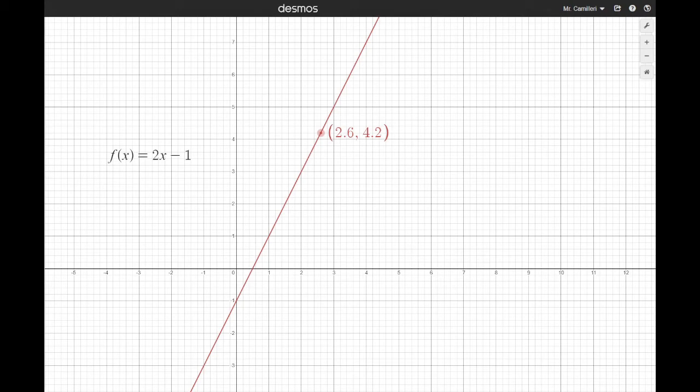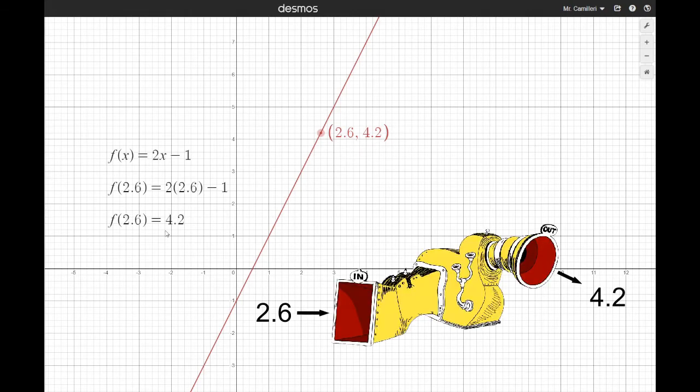So just like before, we can substitute values into this formula, x values, and get out y values. Using this notation, it makes it very clear what's going into the formula, so 2.6 in this case. And as before, we can change the value and generate different y values.